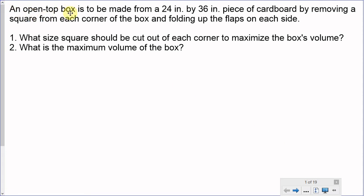This is a box with cut corners problem, which is another popular type of problem that we see in calculus. In this problem we have an open top box to be made from a 24 inch by 36 inch piece of cardboard by removing a square from each corner of the box and folding up the flaps on each side. The first question is what size square should be cut out of each corner to maximize the box's volume? And what is the maximum volume of the box?